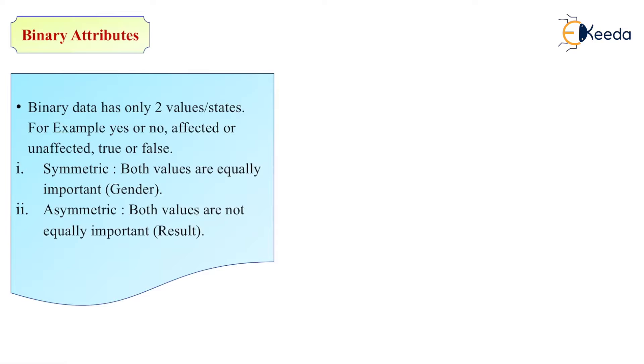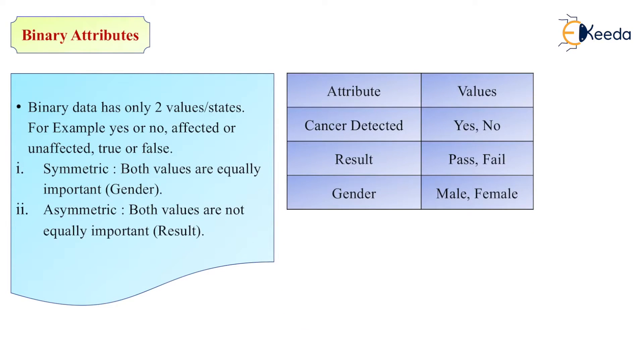Next is asymmetric. Both values are not equally important. We can say a result. A result can be positive, can be negative, can be neutral. See, these are the attributes and these are the values. Consider cancer detected patients. We have a database where we have a result as yes or no. The result can be pass or fail. Gender can be male or female.